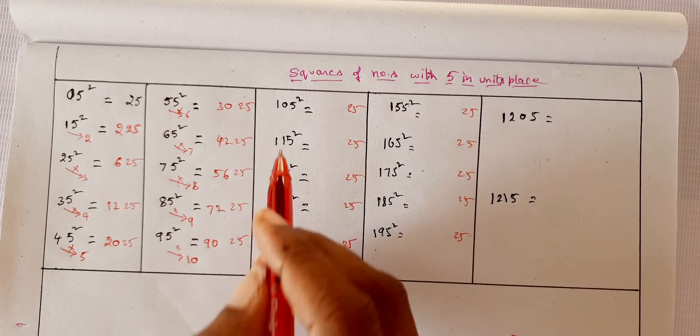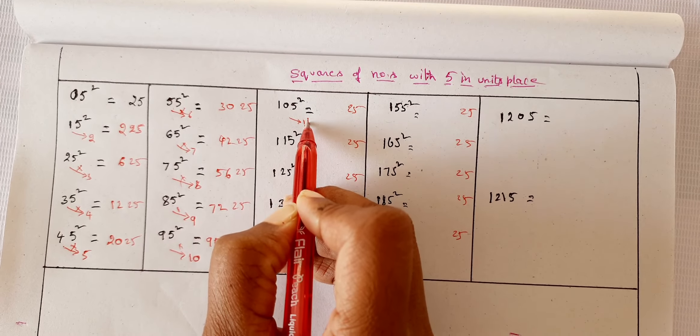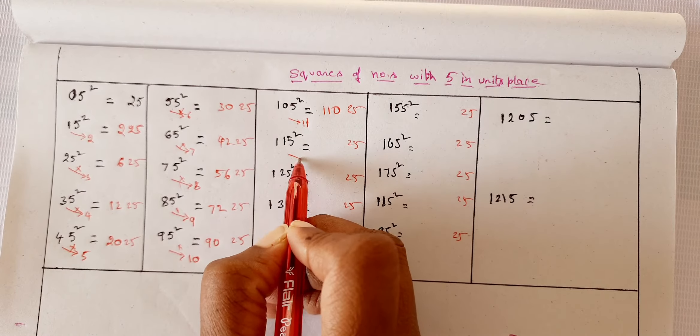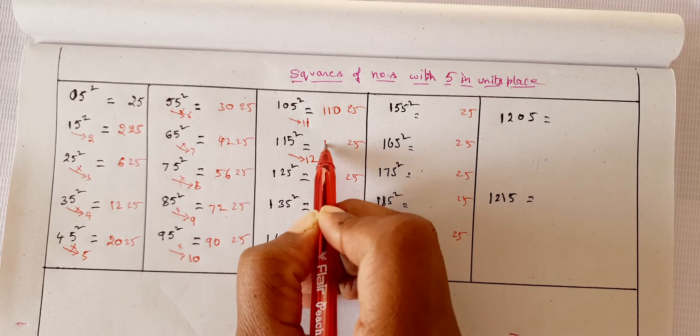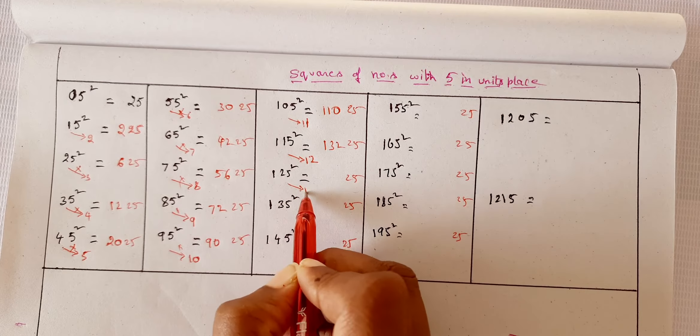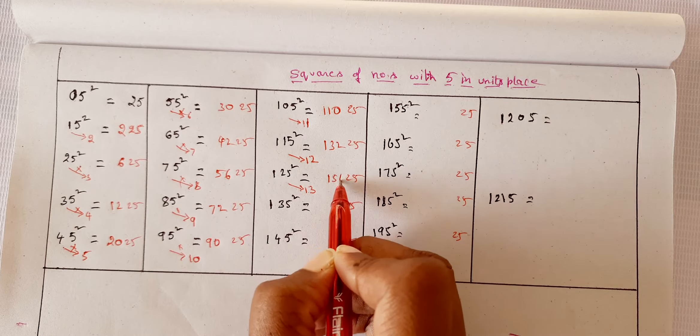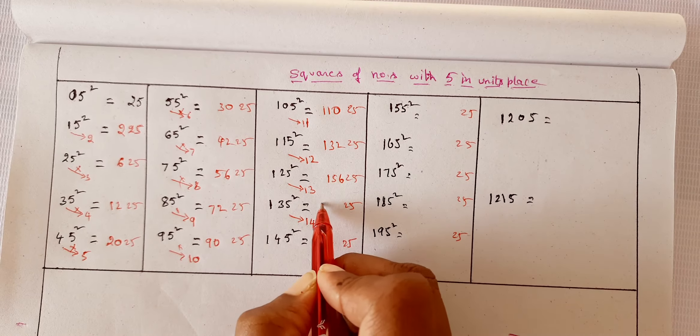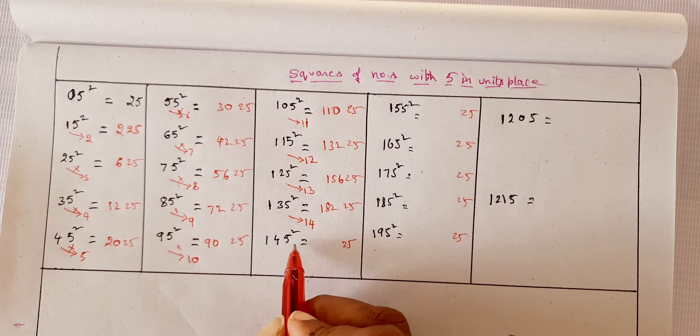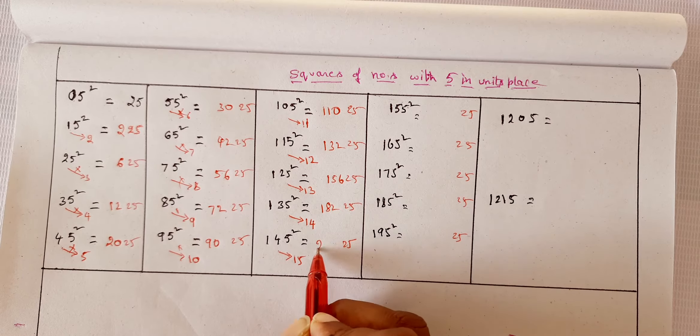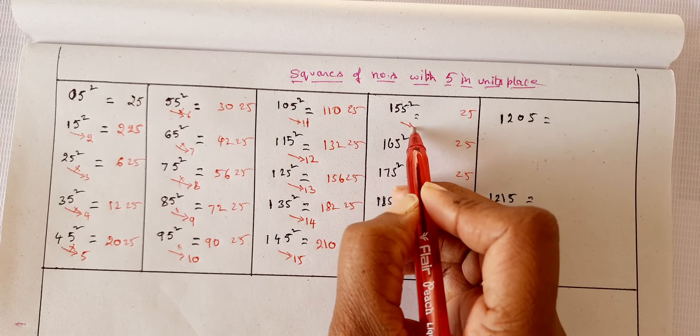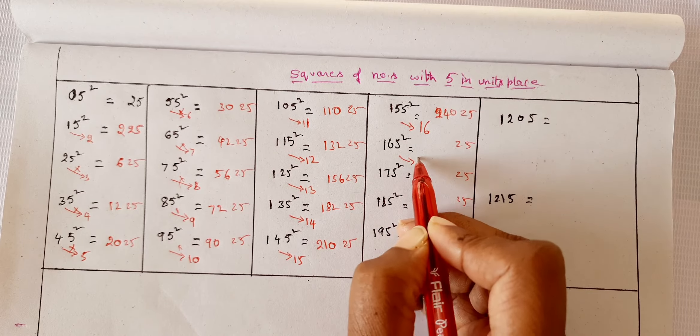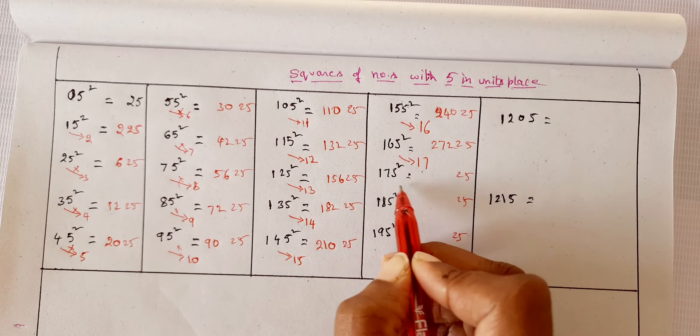Now let's see this one. Now 25, 25, 25, 25, 25, 25, 25, and here also 25, 25, 25, 25, 25, 25. Yes, now 10 into 11. So what is 10 into 11? 110, right? 11 into 12 is 132. 12 into 13 is 156.